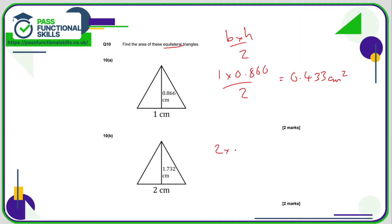10b is 2 times by 1.732 divided by 2. And that comes to 1.732, which seems fairly obvious because if you're multiplying it by 2 and then dividing it by 2, well, these two operations cancel each other out.